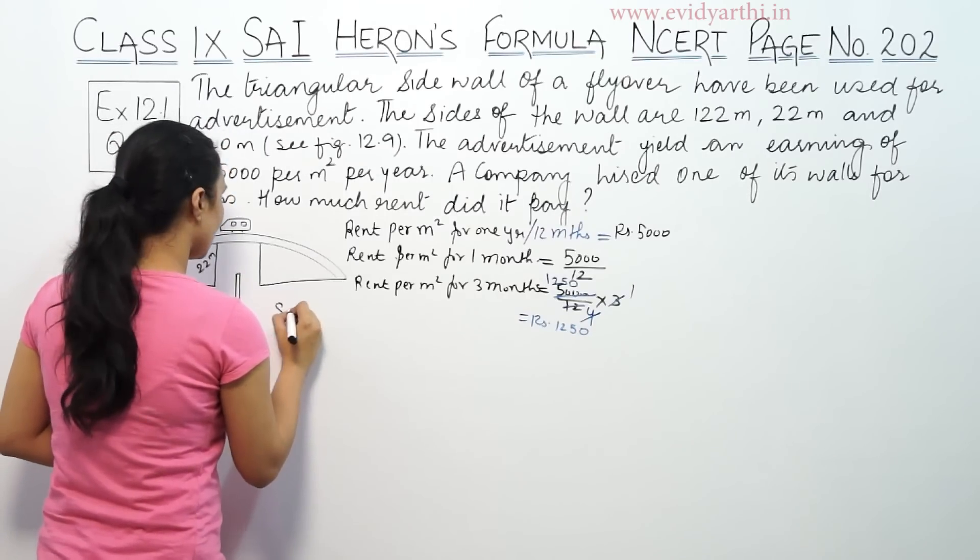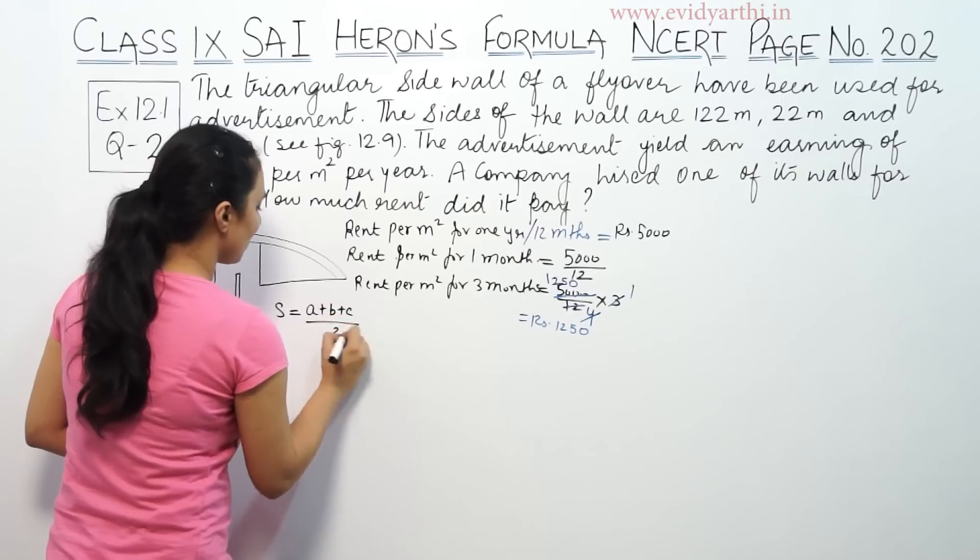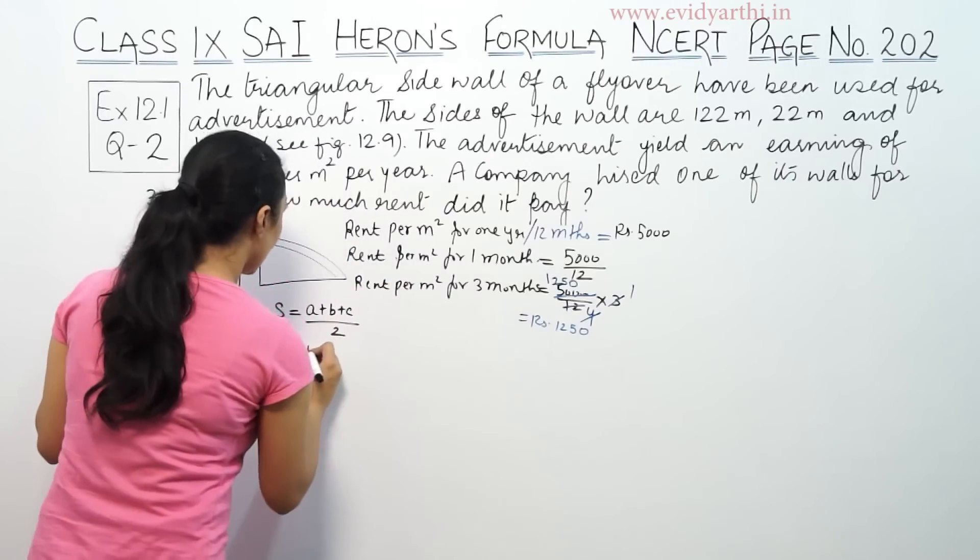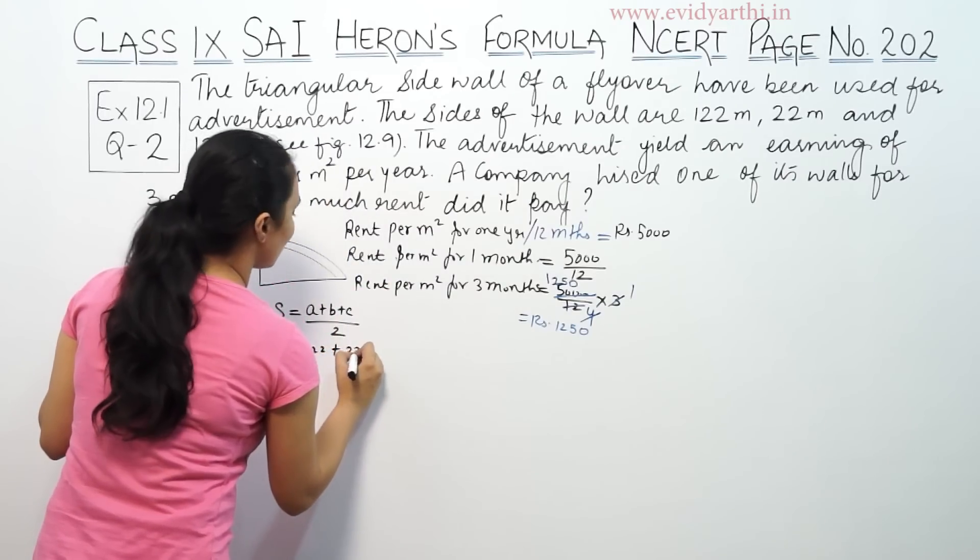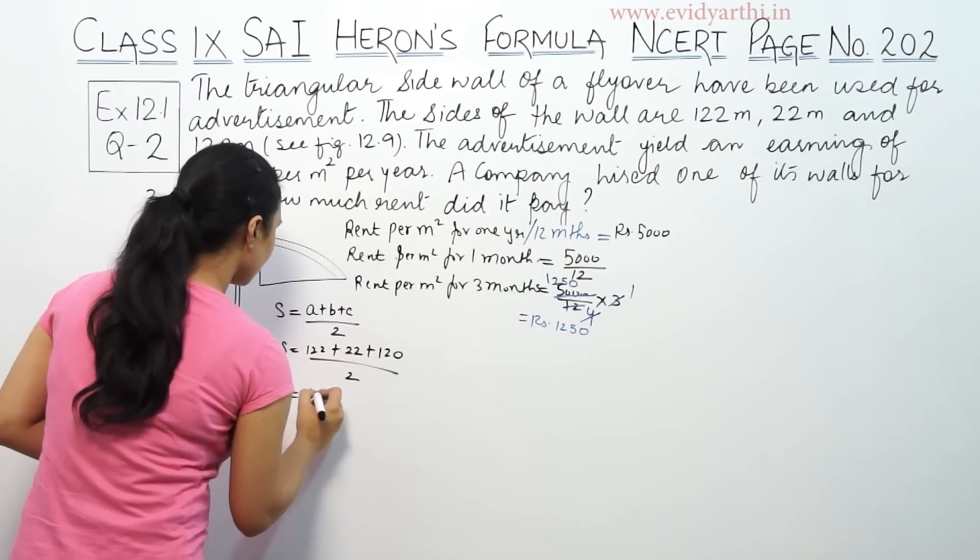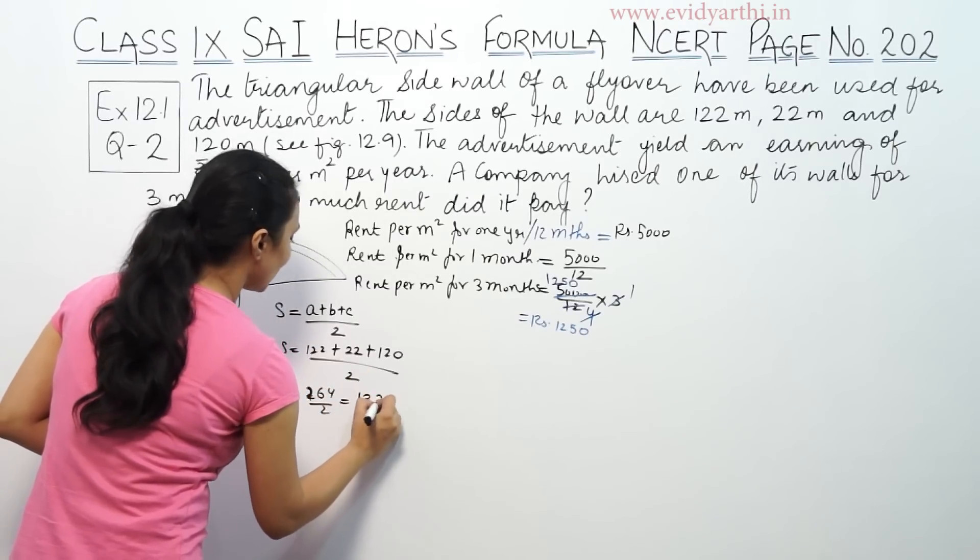So S means semi-perimeter. The formula is a plus b plus c by 2. The first side is 122, then we have 22, then 120 by 2. We get 264 by 2, that means 132 meters.